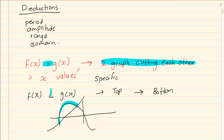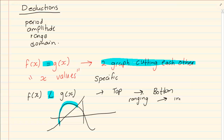So when they give you an inequality sign, then your answer is ranging, which means that it becomes an inequality.